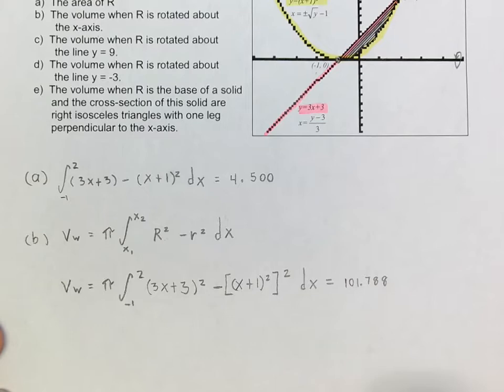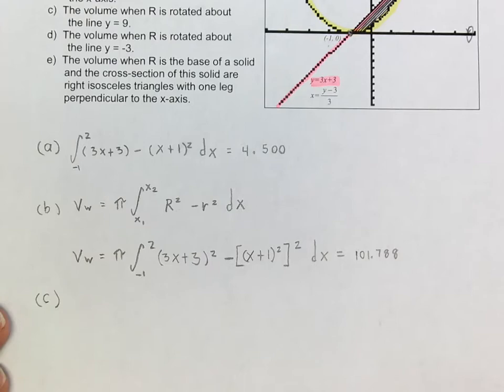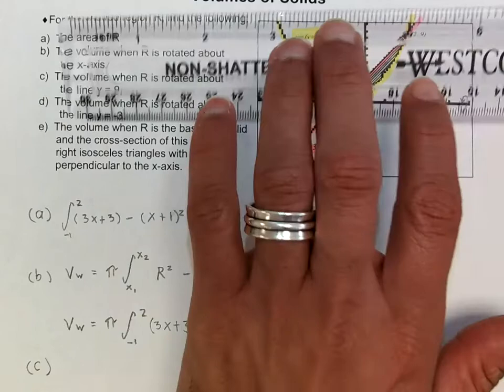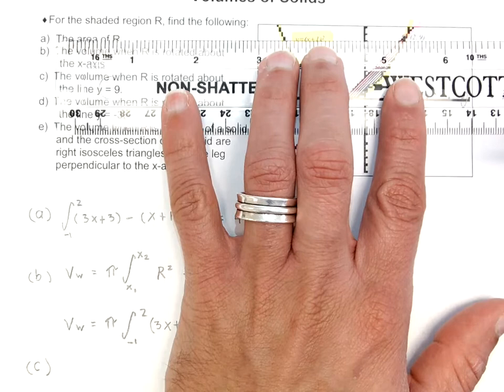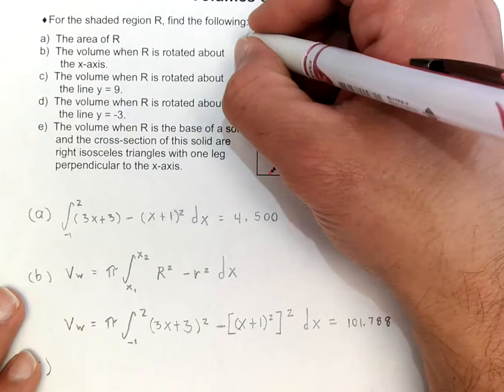When I do that, I get the answer is equal to 101.788. Remember, once you get to that integral I would love for you to use a calculator. You're free to simplify if you want, but mistakes could happen. On C, they want to find the volume when R is rotated about the line y equals 9. I'm going to put that line in a different color — that line right there is y equals 9.